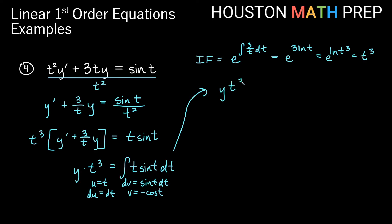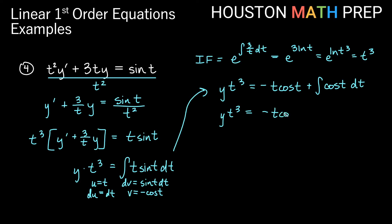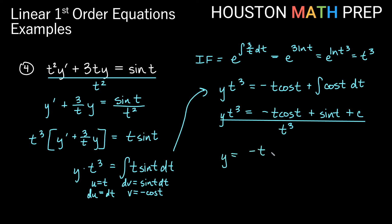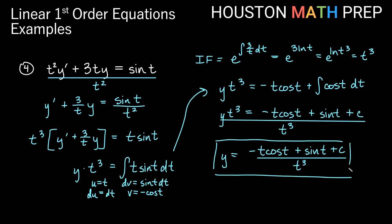Applying integration by parts: y t cubed equals uv, which is negative t cosine t, minus the integral of v du. Since v is negative cosine t, the minus signs combine to give plus the antiderivative of cosine t dt. The antiderivative of cosine t is sine t. So y t cubed equals negative t cosine t plus sine t plus c. Dividing everything by t cubed, we get y equals the quantity negative t cosine t plus sine t plus c, all over t cubed.